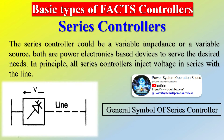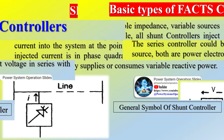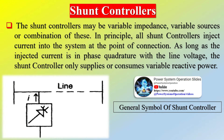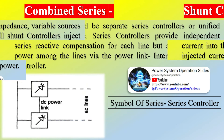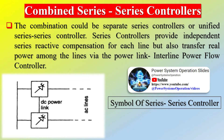FACTS is static equipment used for the AC transmission of electrical energy, meant to enhance controllability and increase the power transfer capability of the network. It is generally a power electronics-based device. FACTS is defined by IEEE as a power electronic-based system and other static equipment that provide control of one or more AC transmission system parameters. FACTS could be connected in series with the power system (series compensation), in shunt with the power system (shunt compensation), or both in series and in shunt.